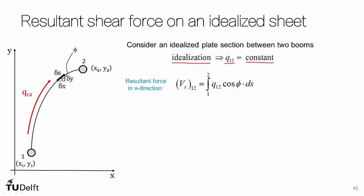What we can recognize is cosine phi is actually just delta x—it's the change in x coordinate along delta s. So we can modify this to the constant shear flow Q12 times the integral from 1 to 2 of dx, which will just be Q12 times (x2 minus x1).